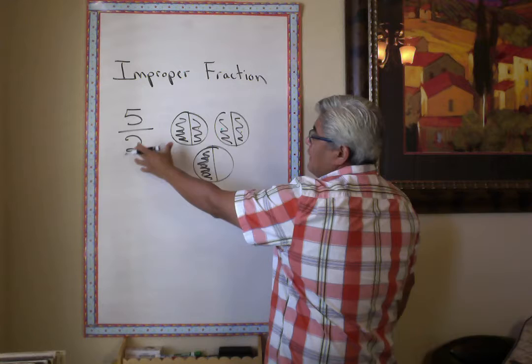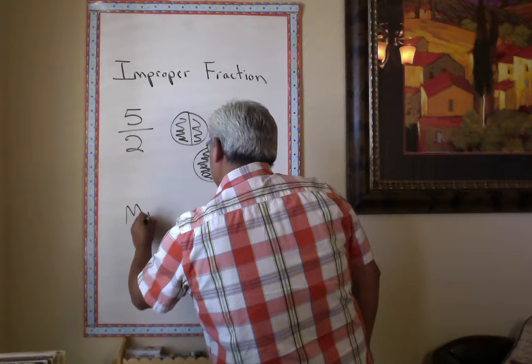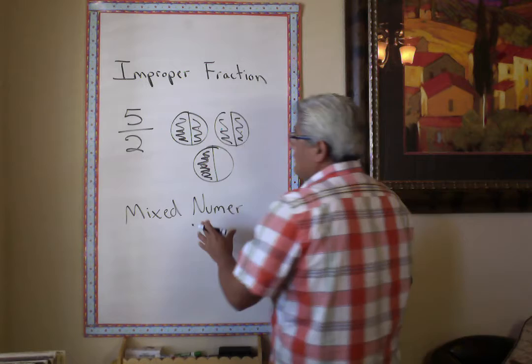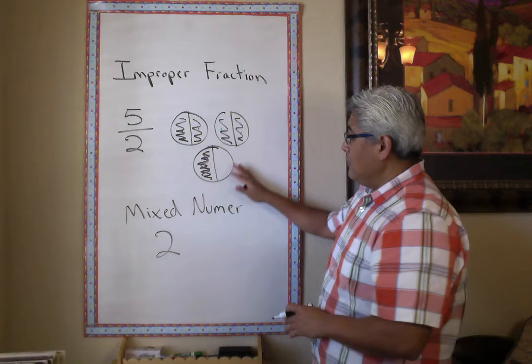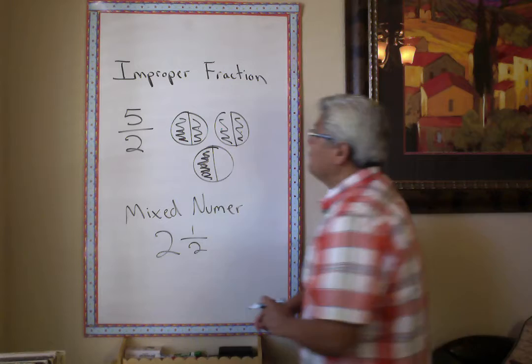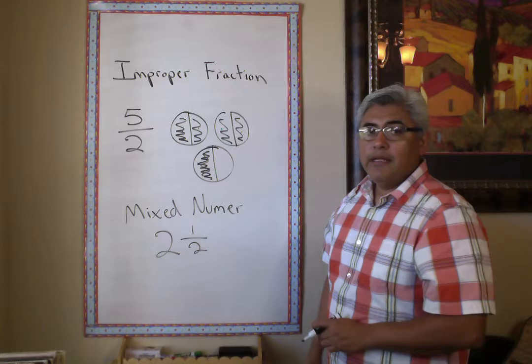From an improper fraction, we can turn it into a mixed number. A mixed number means it has a whole number and it has a fraction. How many wholes are here? One, two — two wholes. And what's the fraction that's left over? One over two. So from an improper fraction, we turned it into a mixed number.